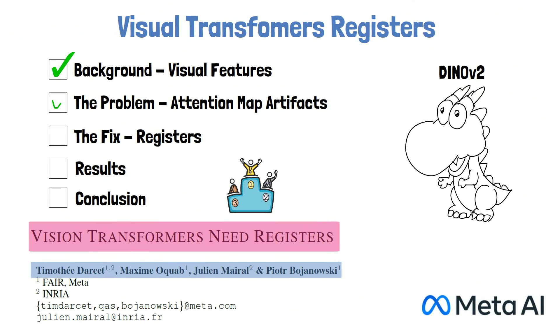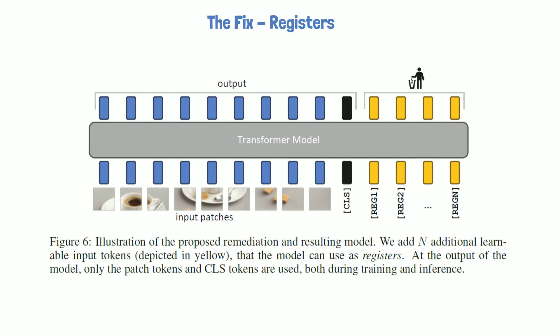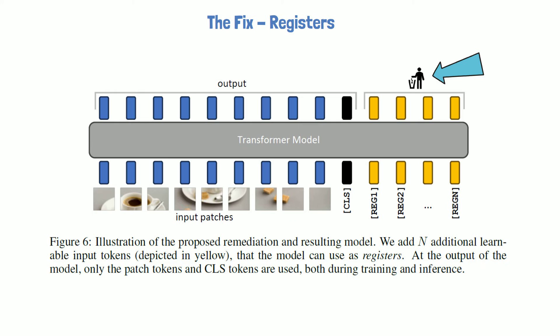We've explained the problem and now we're ready to discuss the fix: the registers. The fix is quite simple. The idea is that if the model learns to use less-important tokens to store global information, we can add more tokens that the model will use to store that information instead of the original image tokens. The added tokens are called registers, and they are added to the input sequence but discarded from the output. Since they are discarded from the output, the assumption is that the model will use them — rather than image patch tokens — to store global information.